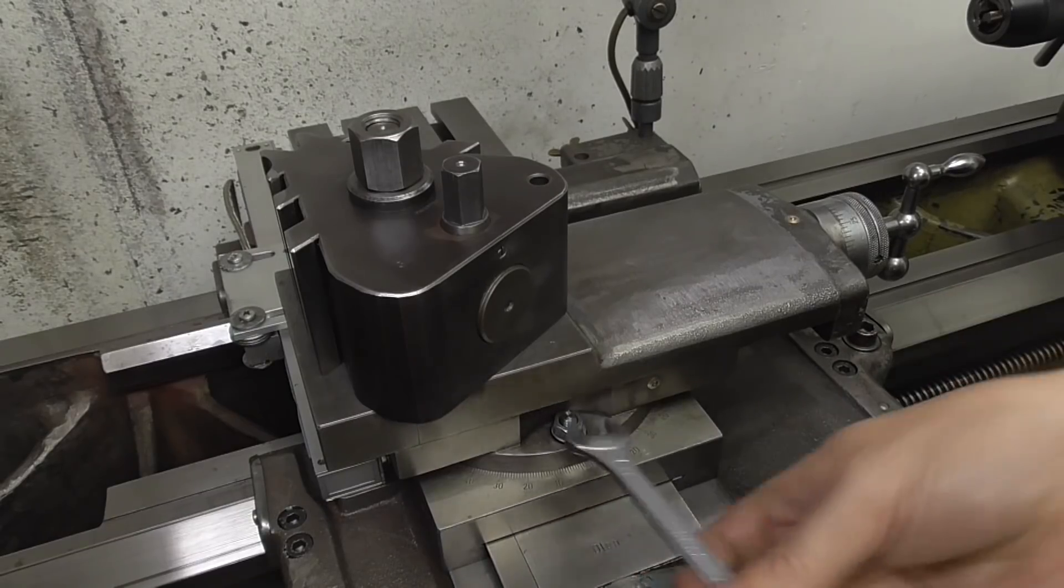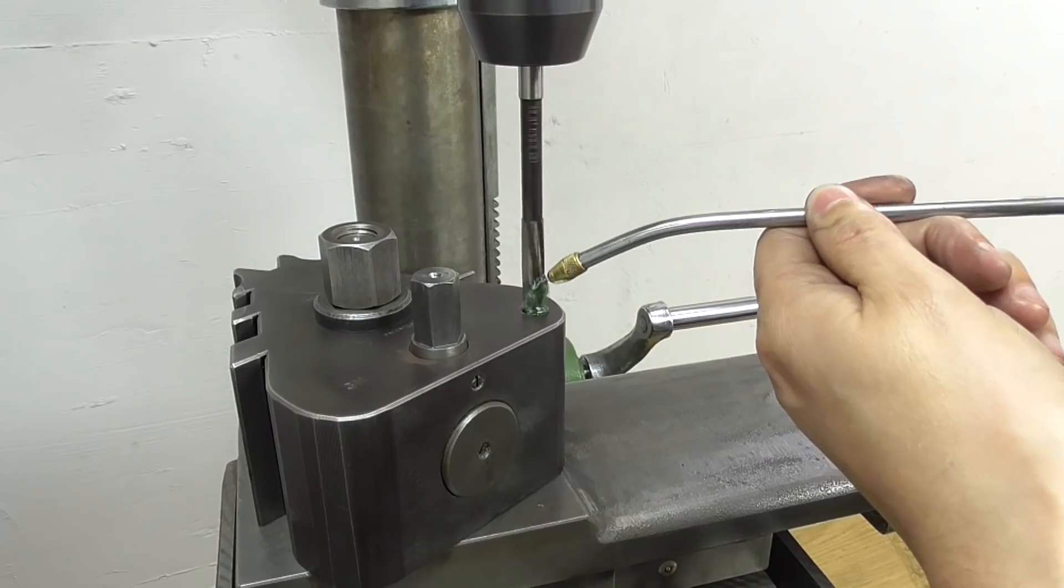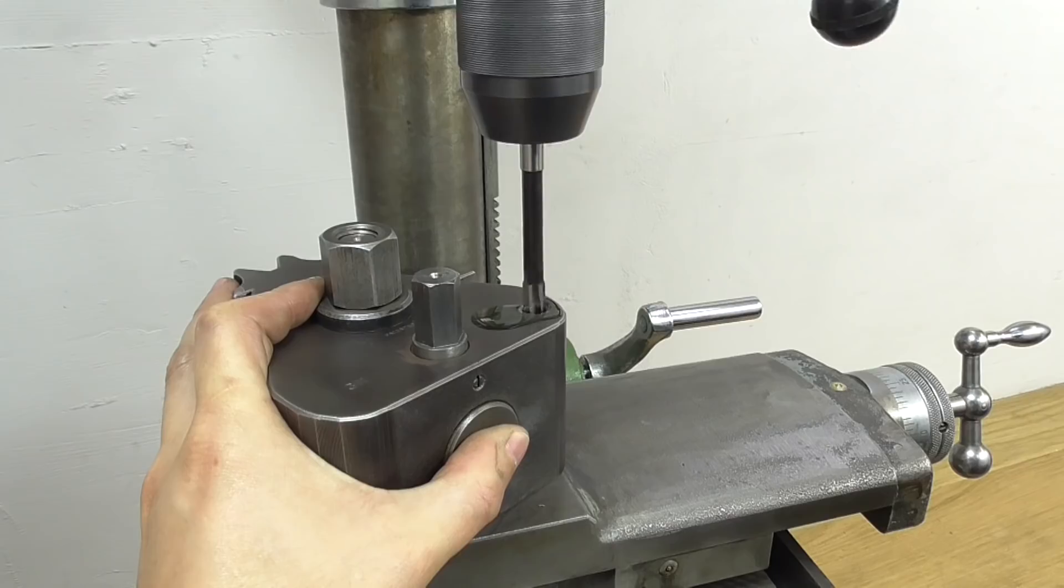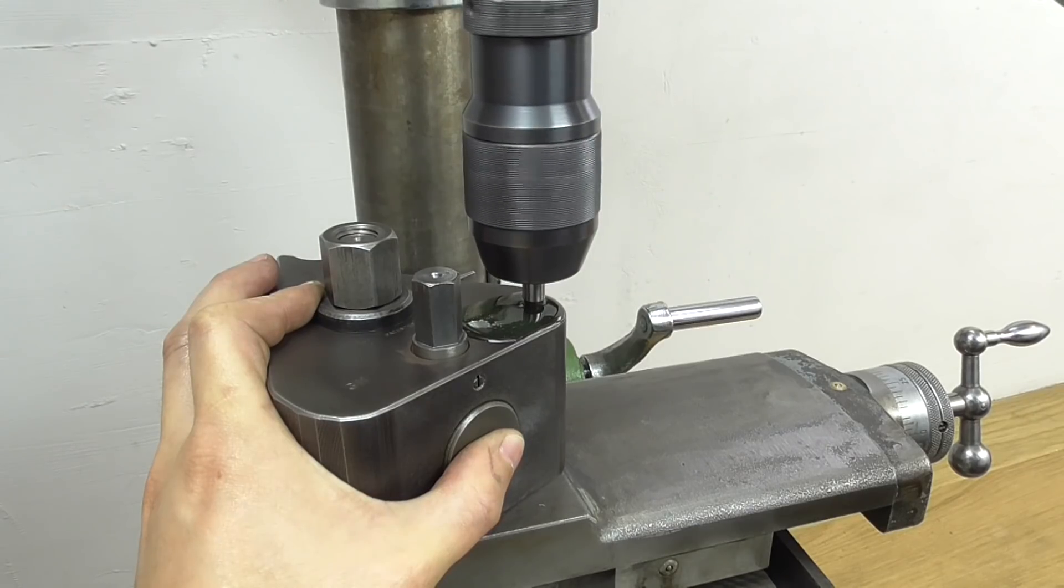And all that just to remove it right afterwards again. But this time I'll keep the perfectly lined up tool post on it. Like this I can ream the hole in the top slide perfectly accurate, lined up with the existing hole of the tool post.